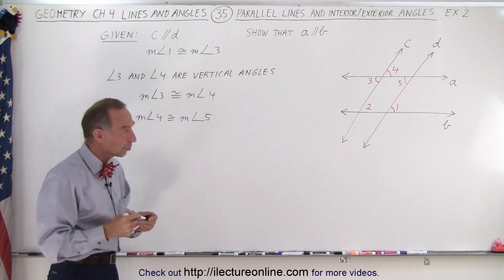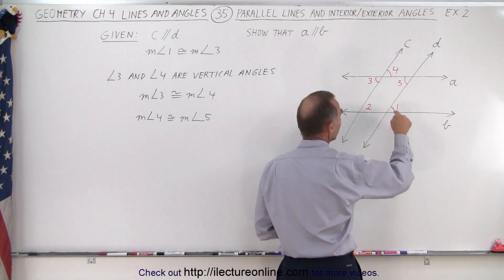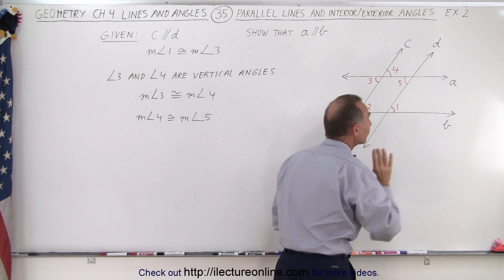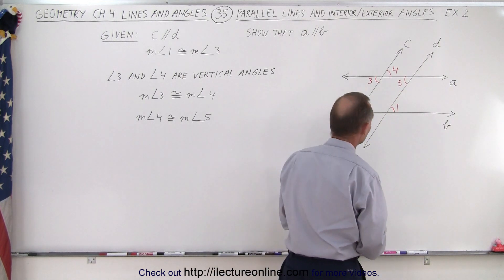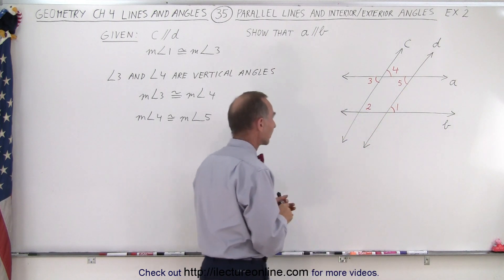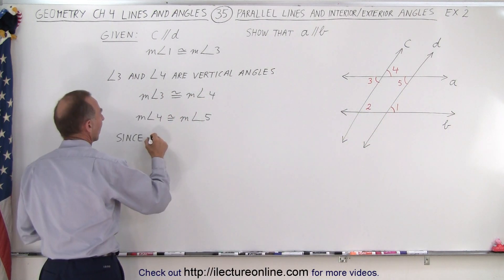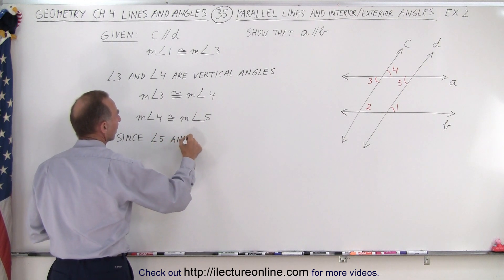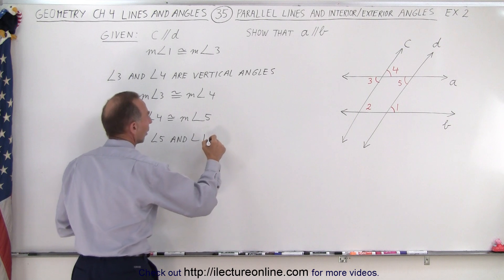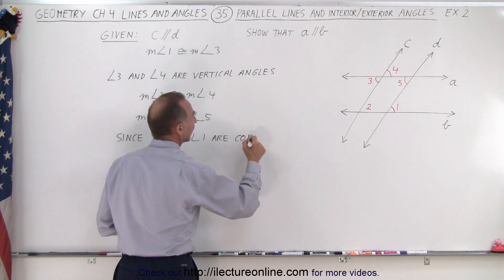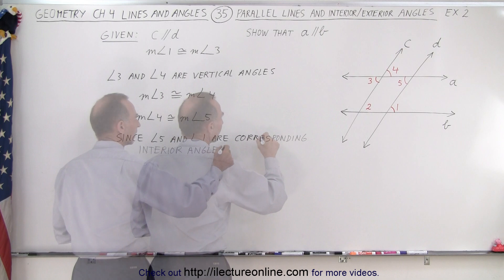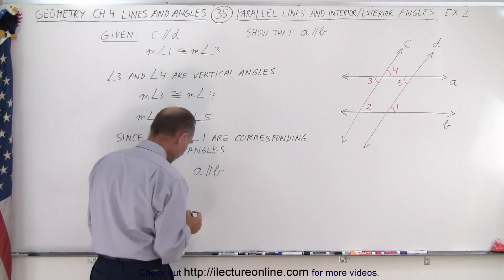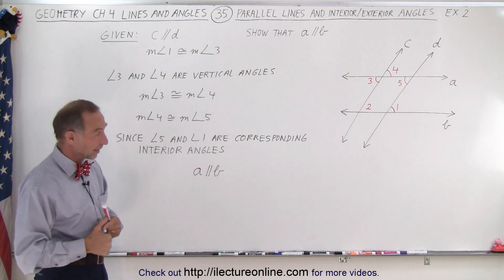Now we're on track to show that A and B are parallel, because angle one and angle five are corresponding interior angles and must therefore be equal to one another. Since angle five and angle one are corresponding interior angles, and since they're congruent, we can conclude that A must therefore be parallel to B. And that is how it's done.